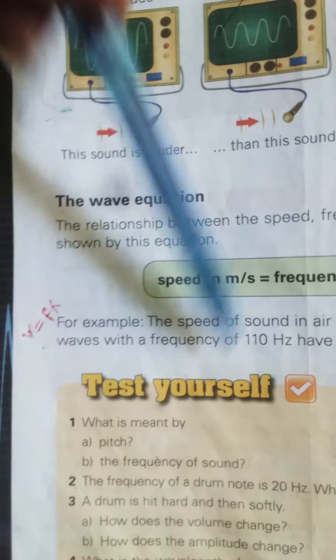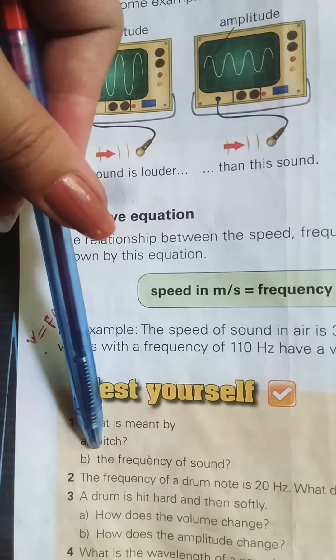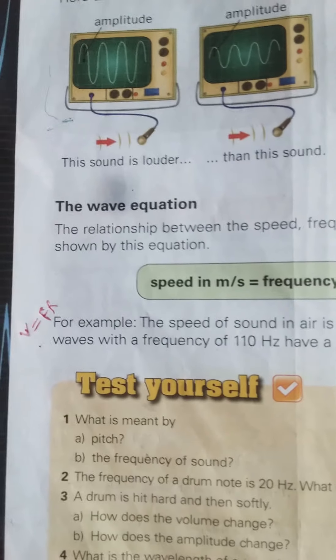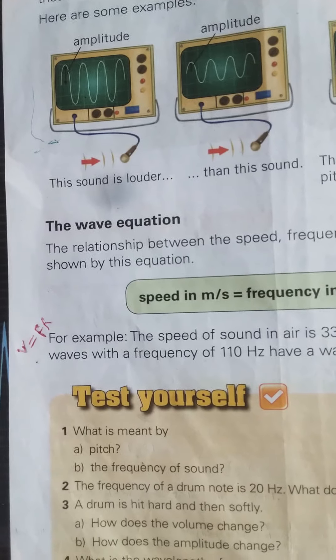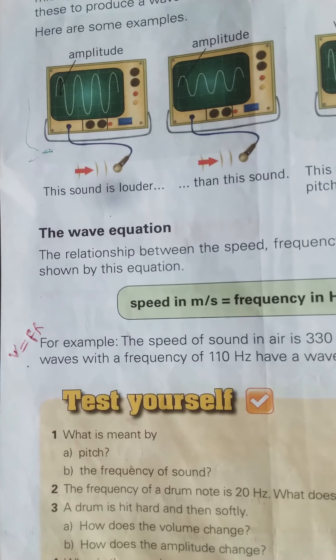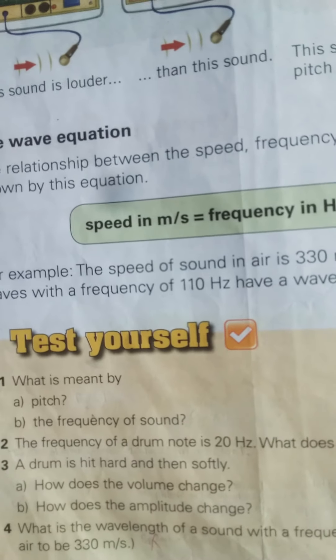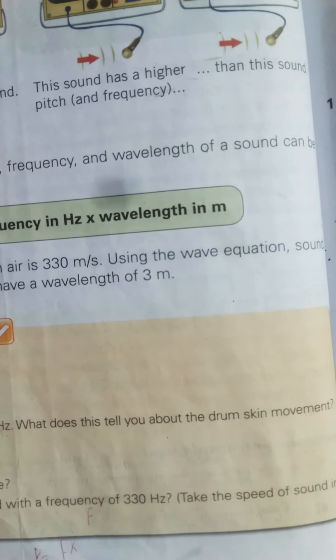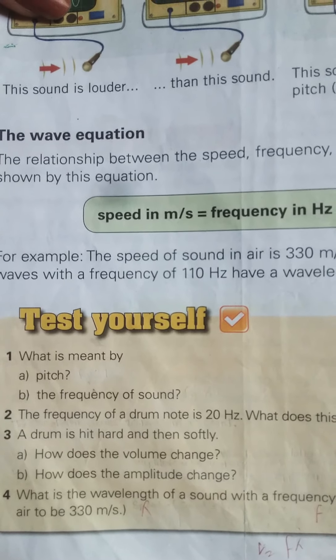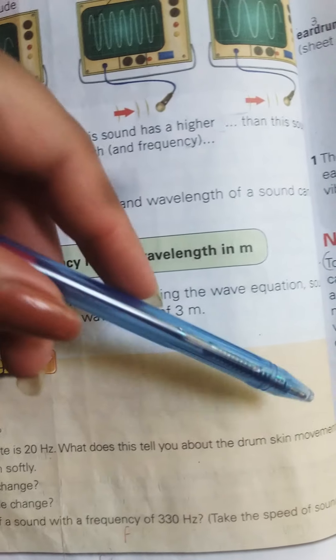Now here are some review questions. First, what is meant by pitch? Pitch means how high or low a sound is. What is frequency? Frequency is the number of vibrations produced per second. For a numerical: if a drum note is 20 Hz, the drum skin will move 20 times in one second.